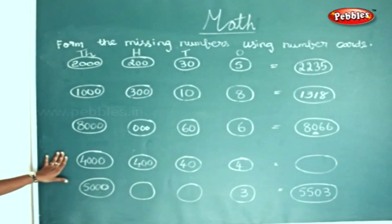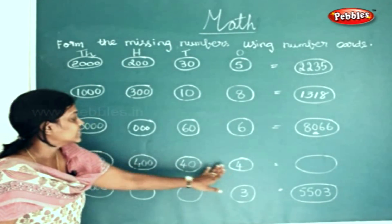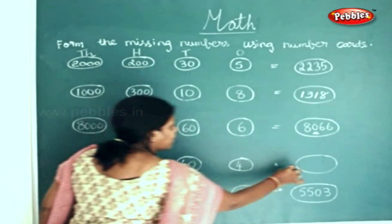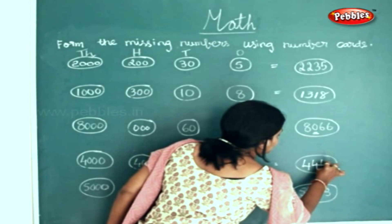The next sum: 4000, 400, 40 tens, and 4 ones. So we will write this as 4444.